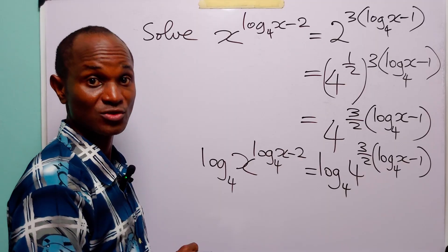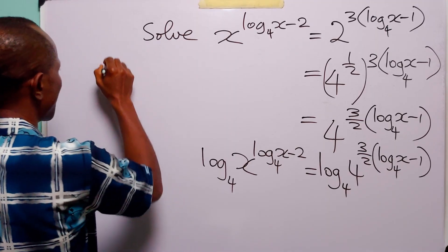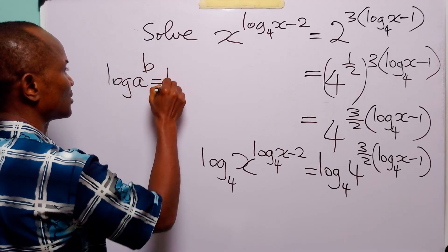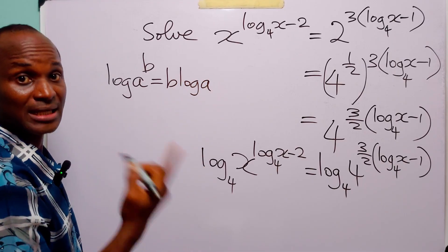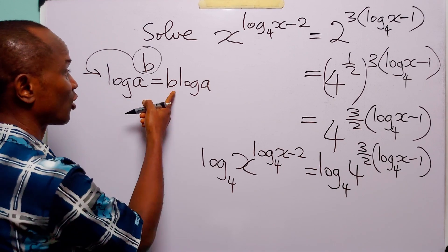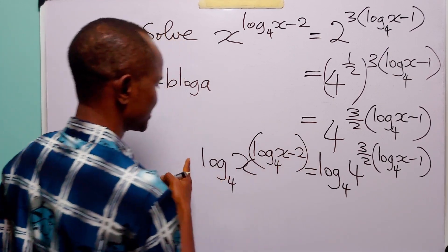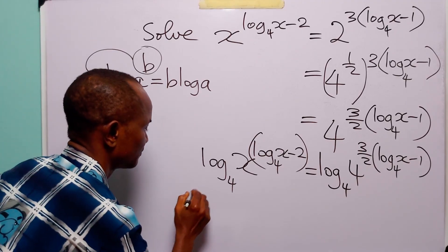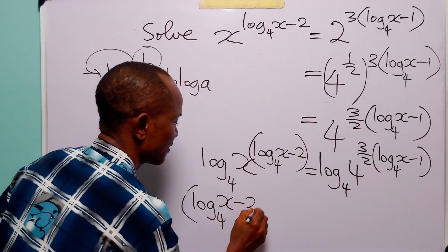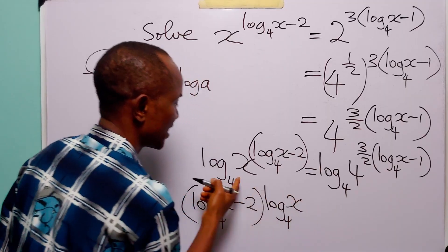And of course, the next step we are going to take will be to apply the power rule — the rule of logarithm that says that when you have log a to the power b, this is equal to b multiplied by log a. That is, we can bring down this exponent to the front of the log term to become a multiplier. So in this case, we bring down this to the front. When we do that, we have log to base 4 of x minus 2, multiplied by log to base 4 of x.